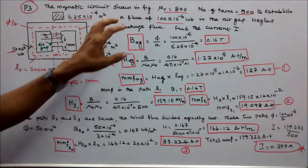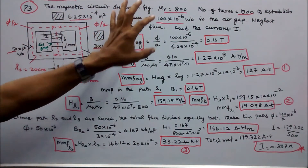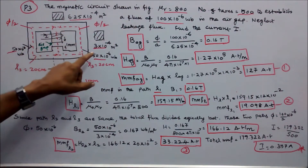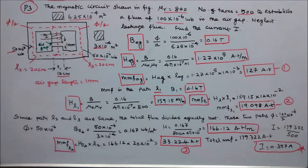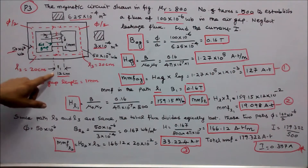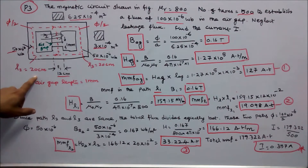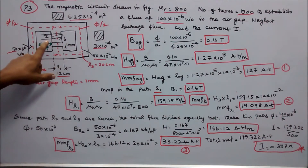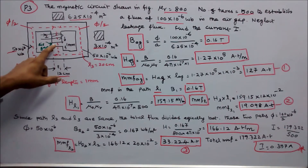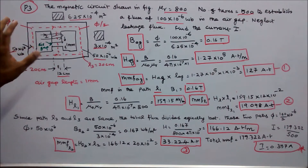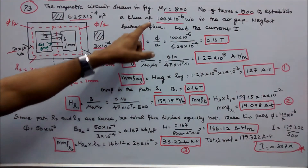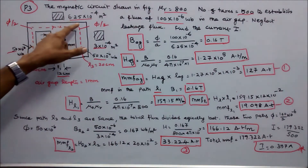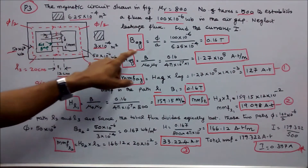Problem number 3: The magnetic circuit shown in figure has relative permeability 800. Cross-sectional area of the outer limb is 3 × 10⁻⁴ m². Cross-sectional area of the central limb is 6.25 × 10⁻⁴ m². Effective length L1 = 12 cm, L2 = 20 cm, L3 = 20 cm. Air gap length is 1 mm. Number of turns is 500. Establish a flux of 100 × 10⁻⁶ Wb in the air gap. First, flux density in the air gap = φ / A = 100 × 10⁻⁶ / 6.25 × 10⁻⁴ = 0.16 T.